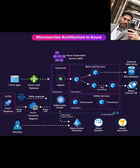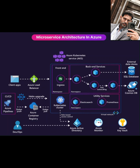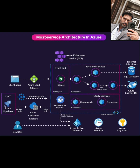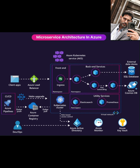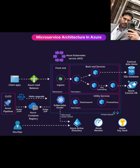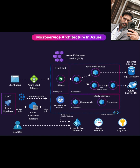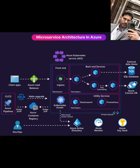Hey everyone, and welcome back to the channel. Microservices are a game-changer for building scalable, resilient applications. But running them, especially in the cloud, requires a solid platform. If you're looking at Azure, the ideal place to host your microservices is often Azure Kubernetes Service, or AKS. Today, we're going to walk through a typical microservice architecture built on AKS.